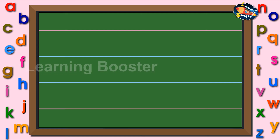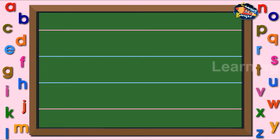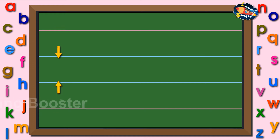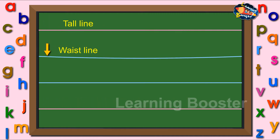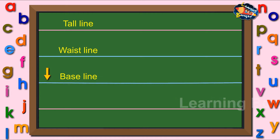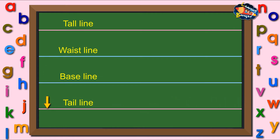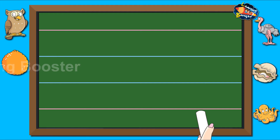Hello children. We learned to write small letters A to Z using red and blue lines. Look at the two red and two blue lines. Each has a name: tall line, base line, base line, and tail line. In this video,